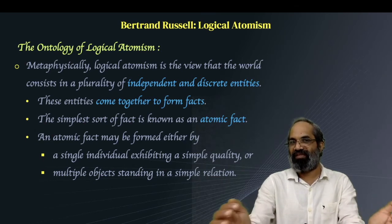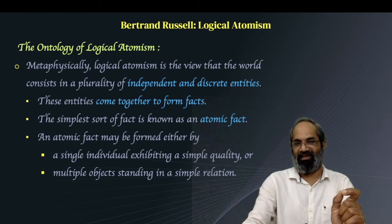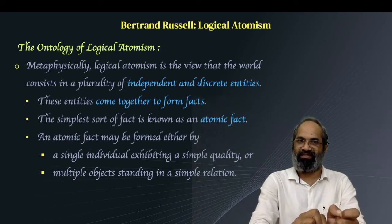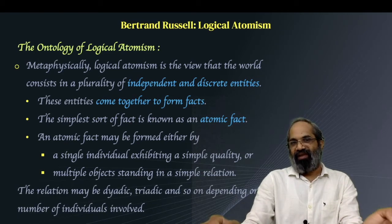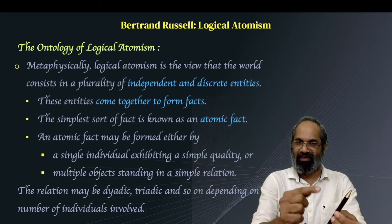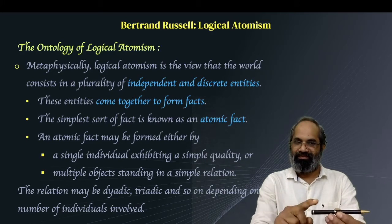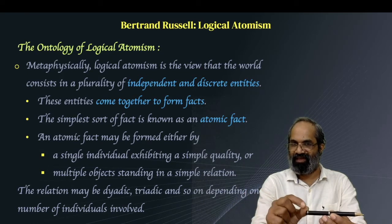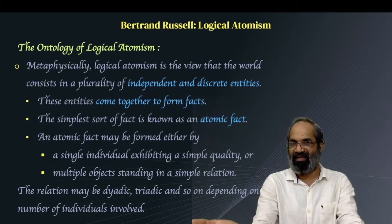So there are two ways atomic facts can be formed: either an object exhibiting a quality, or multiple objects standing in a simple relation. The relation may be dyadic, triadic, and so on depending on the number of individuals involved. When a single individual has a simple quality it is dyadic — for example, 'this pen is black' associates pen and black, two objects. When three things are associated, it becomes triadic, and so on.